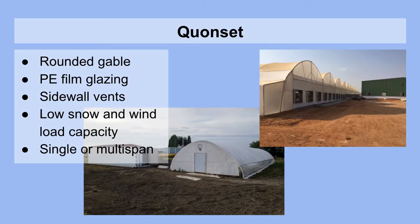The first type of true greenhouse we're going to look at is the Quonset structure. They are characterized by a rounded gable and are usually glazed with polyethylene film. They have sidewall vents that can be motorized and automated or manually operated. They have fairly low snow and wind load capacities, so they are not appropriate for places where extreme snow and wind is an issue. And they can be single or multi-span.